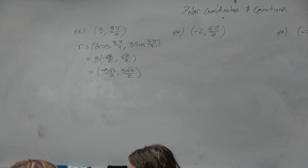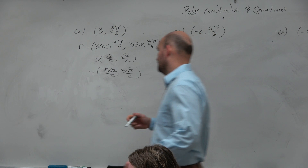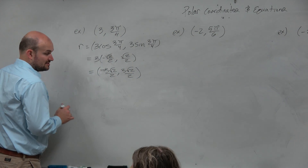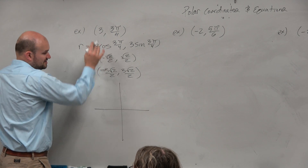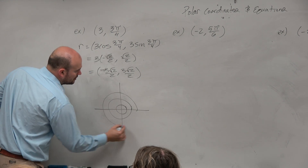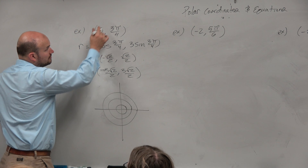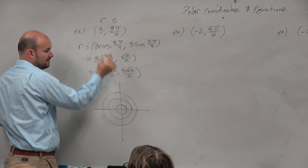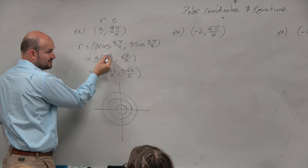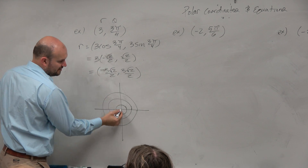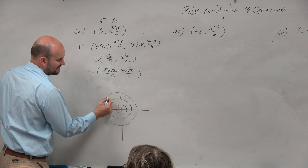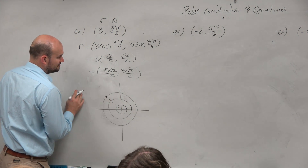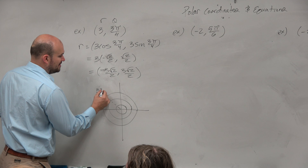There are two easy representations of this point, and one that's a little more difficult to understand. We know this is radius 3, and the angle r, theta is 3π/4, which is in the second quadrant — that's why the cosine of 3π/4 was negative. The reference angle is 45 degrees, so the point is at (3, 3π/4).